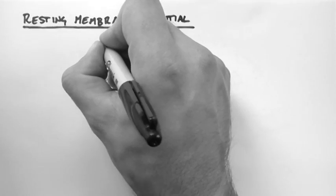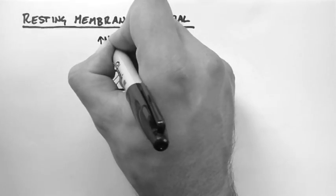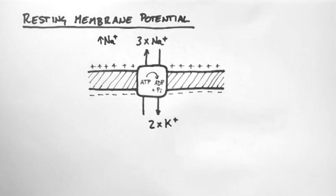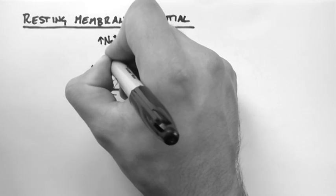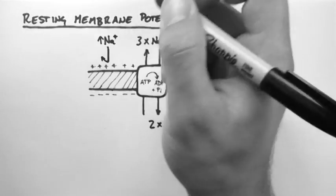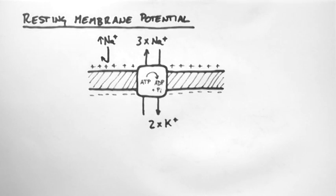Now furthermore there is also a higher concentration of sodium outside the cell than inside. So sodium would like to move down its concentration gradient, but can't because there is a membrane in the way.